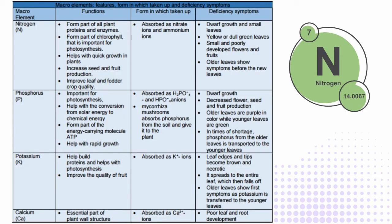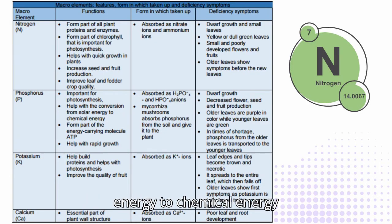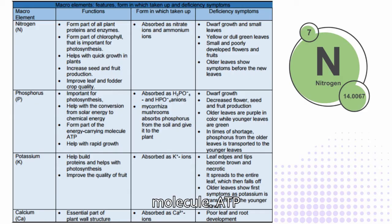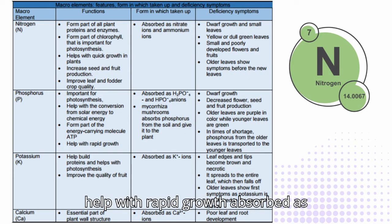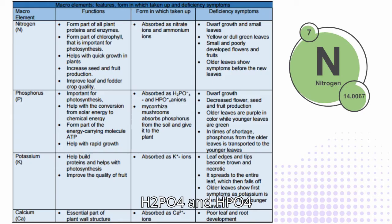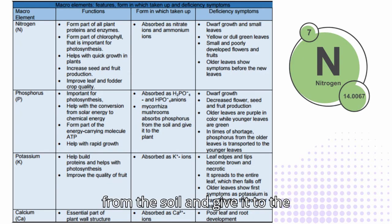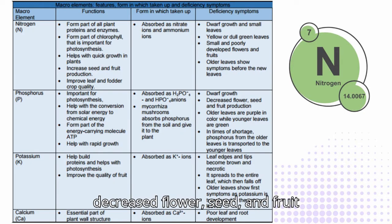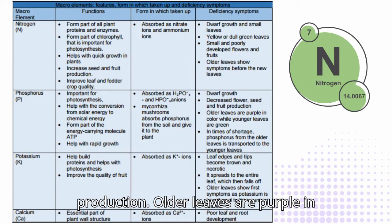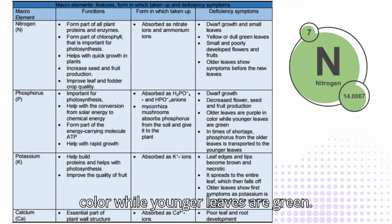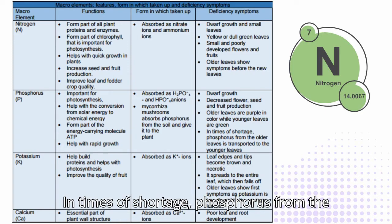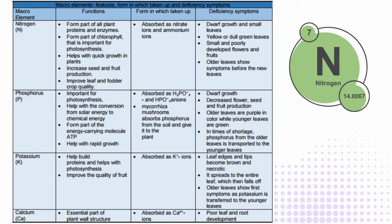Phosphorus (P): Important for photosynthesis, helps with the conversion from solar energy to chemical energy, forms part of the energy-carrying molecule ATP, and helps with rapid growth. Absorbed as H₂PO₄⁻ and HPO₄²⁻ ions. Mycorrhiza mushrooms absorb phosphorus from the soil and give it to the plant. Deficiency symptoms: dwarf growth, decreased flower, seed and fruit production. Older leaves are purple in colour while younger leaves are green. In times of shortage, phosphorus from older leaves is transported to the younger leaves.